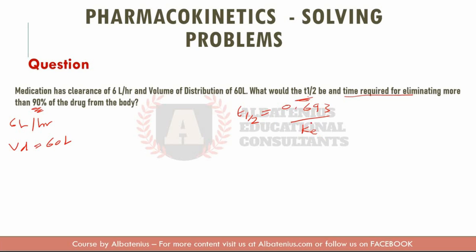Now, this value was not given to me in the test, so I have to find it. But the elimination rate constant, we know that it equals clearance by the volume of distribution. So 6 divided by 60 equals 0.1. So this is my elimination rate constant. So I'll come here and plug it in that value. So my T half is 6.93 hours.